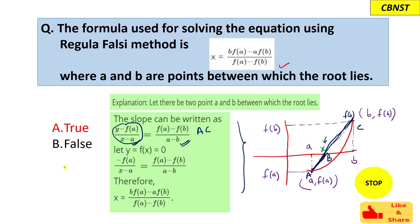This is the slope formula—(y minus y1) upon (x minus x1)—that we have studied in our math classes. If we put y equal to f(x) equal to 0 in this equation, then we will get this. After solving, we will get this x, which is the root.